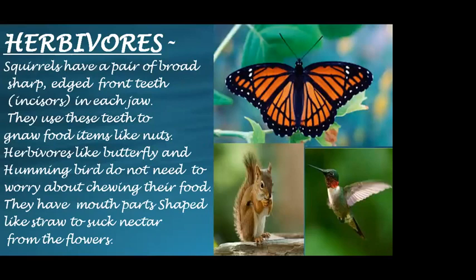Some other animals like squirrels have a pair of broad sharp-edged front teeth called incisors in each jaw. They use these teeth to gnaw food items like nuts. Herbivores like butterfly and hummingbird do not need to worry about chewing their food — they have mouth parts shaped like a straw to suck nectar from flowers.